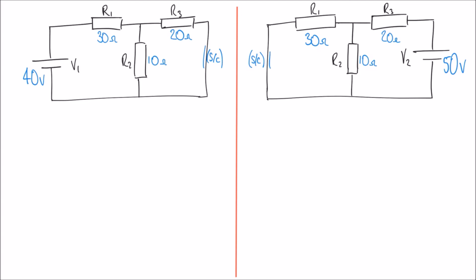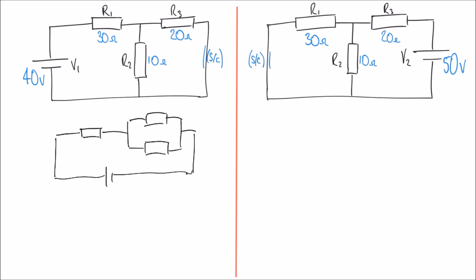Looking at the left hand side first, we can simplify this circuit further. The current flows from the supply through R1, reaches a junction where some flows through R2 and some through R3, then they rejoin and return to the supply. So I can think of this as one resistor followed by two resistors in parallel. I could redraw this circuit as a cell leading to R1, which then splits into R2 and R3 in parallel, and then back to the supply. This lets us combine R2 and R3 in parallel into just one equivalent resistance.